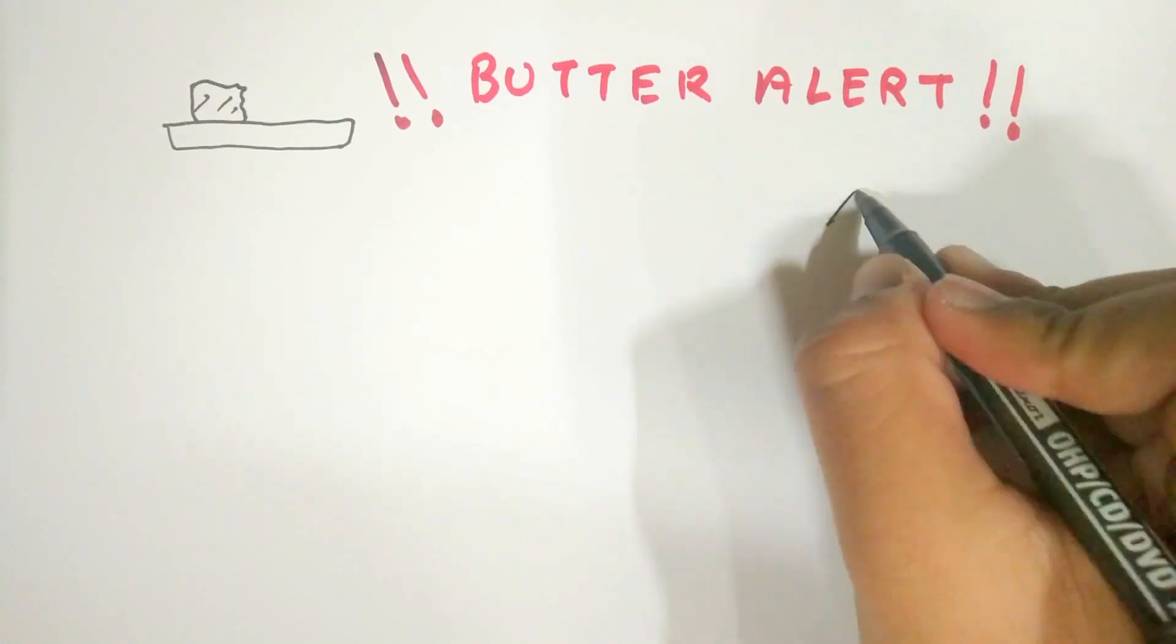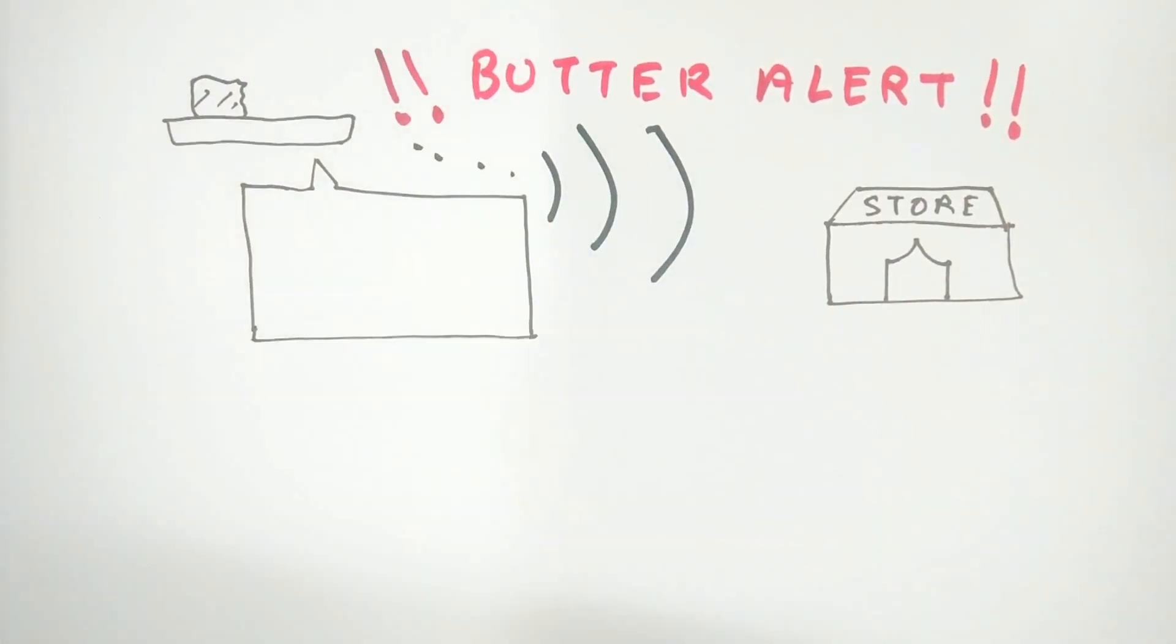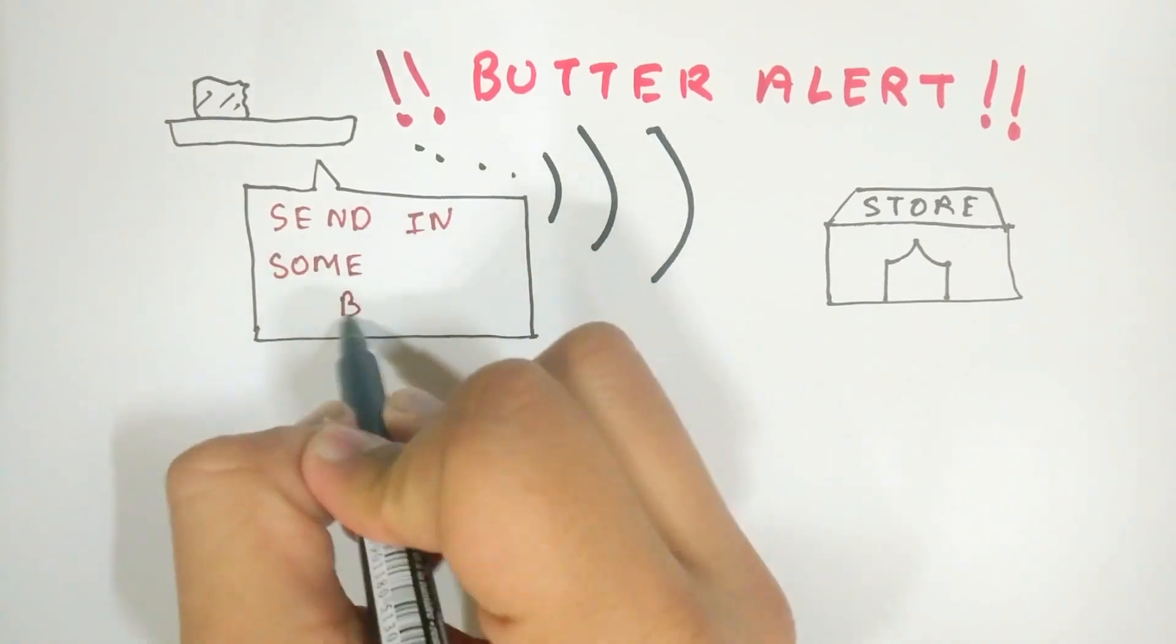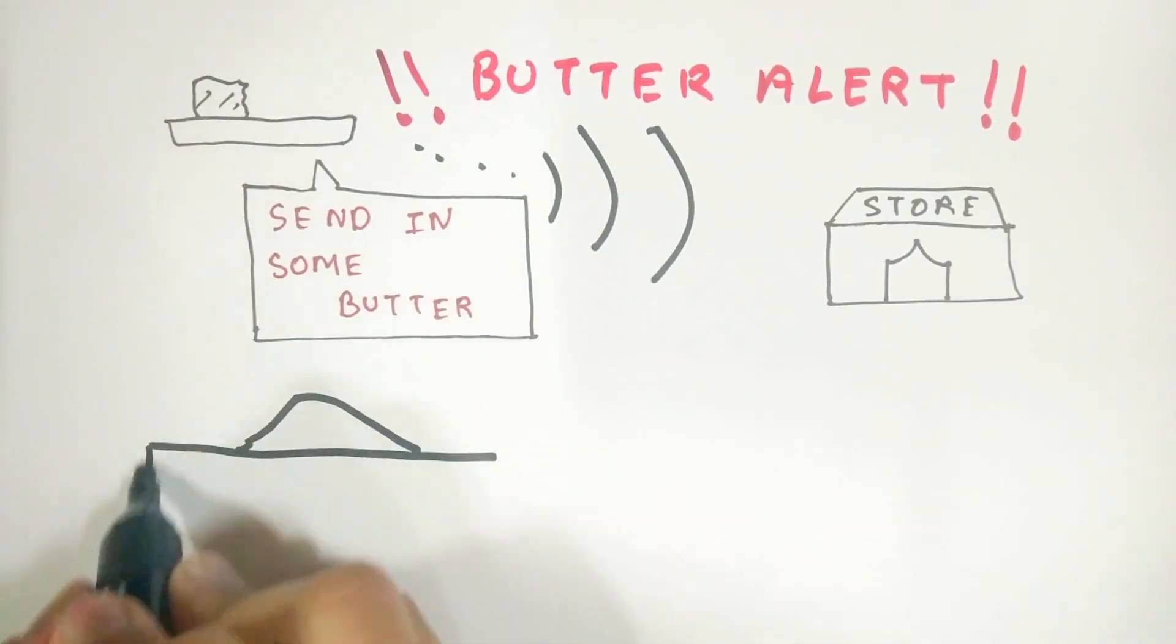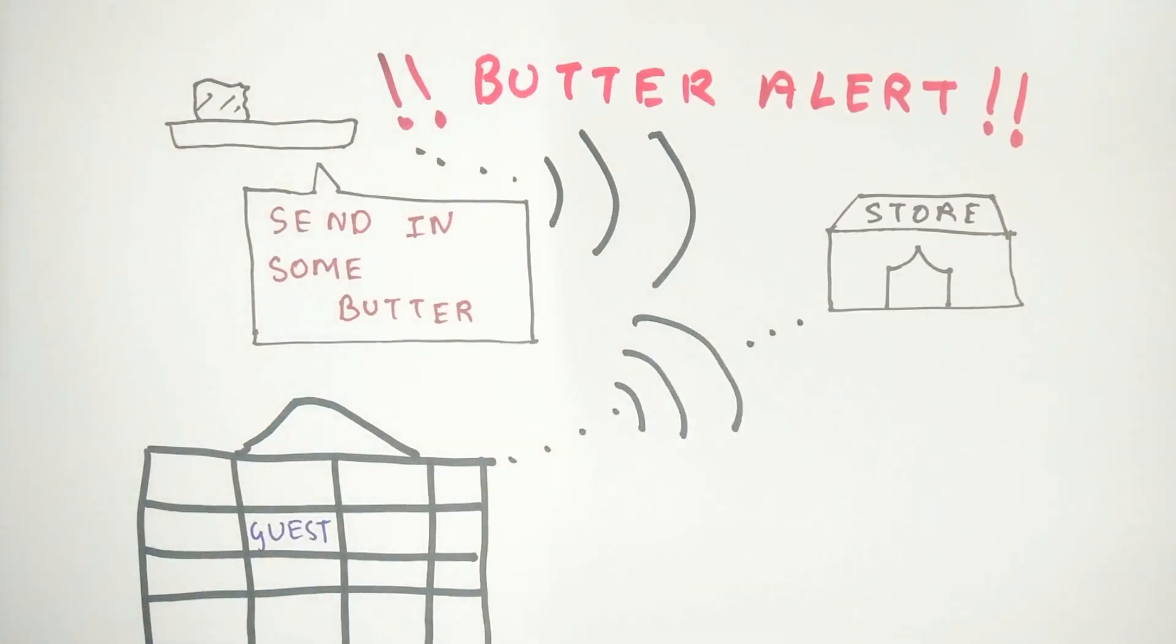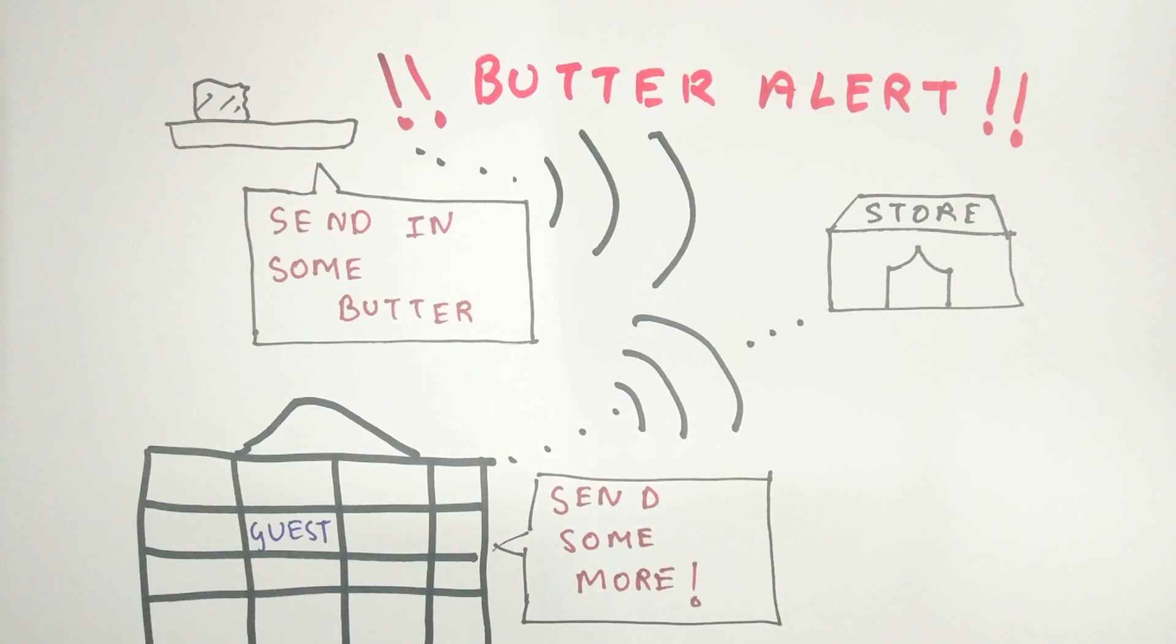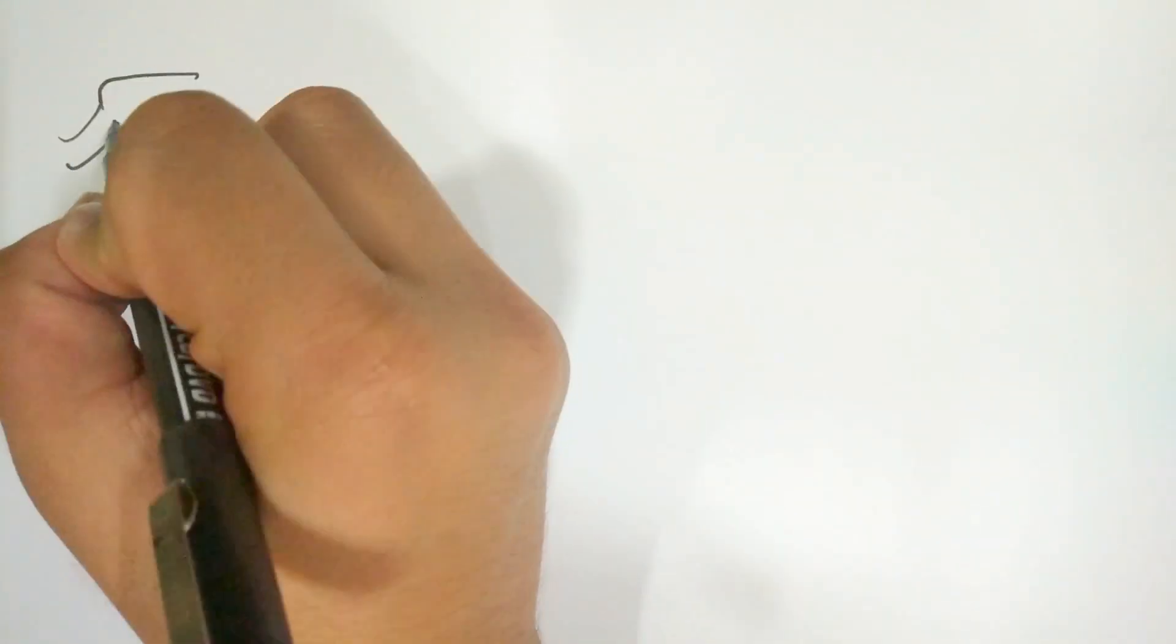Another application is that the kitchen knows what you have in the inventory. If your stock of butter is less, it can automatically order butter for you. Your calendar tells the fridge that there are some guests coming over the next day for dinner, so the fridge orders some more stuff just in case the guests need it.